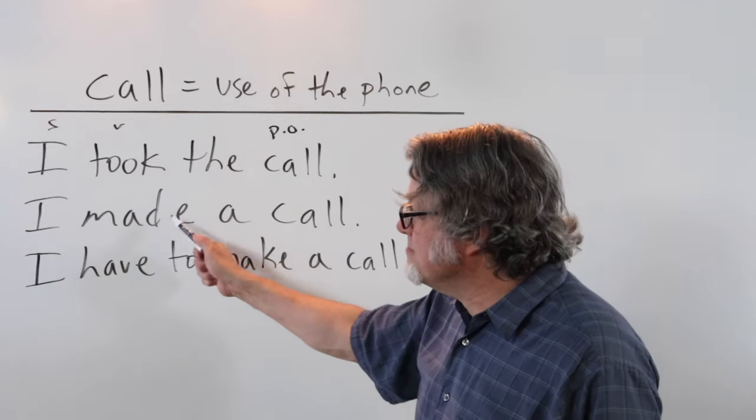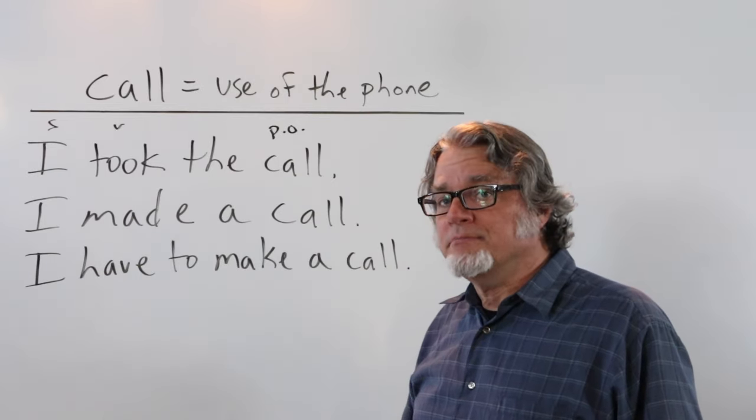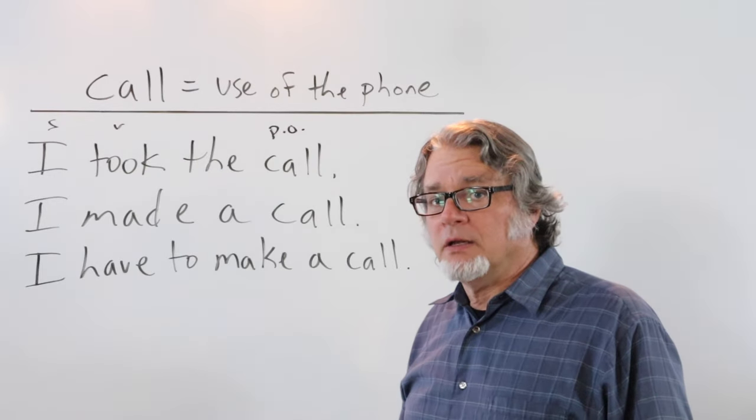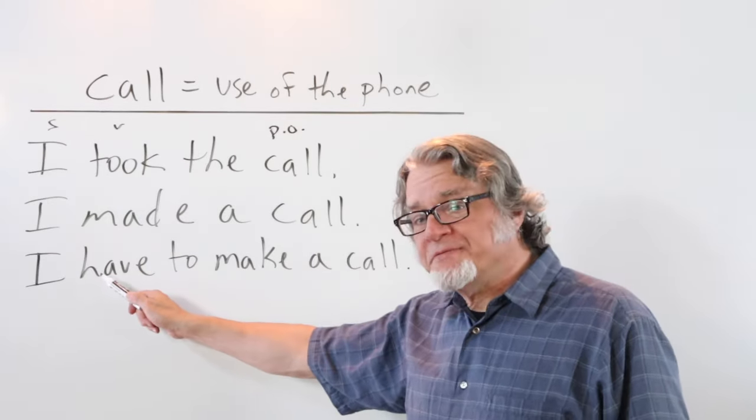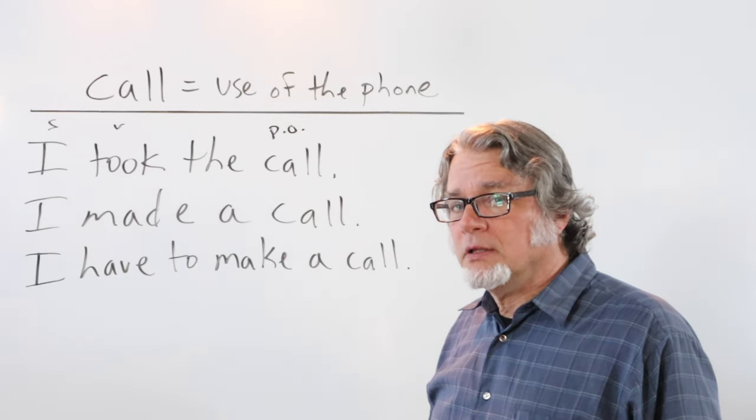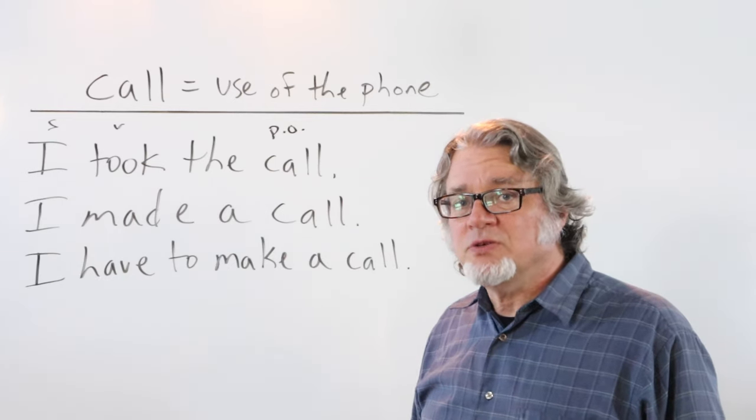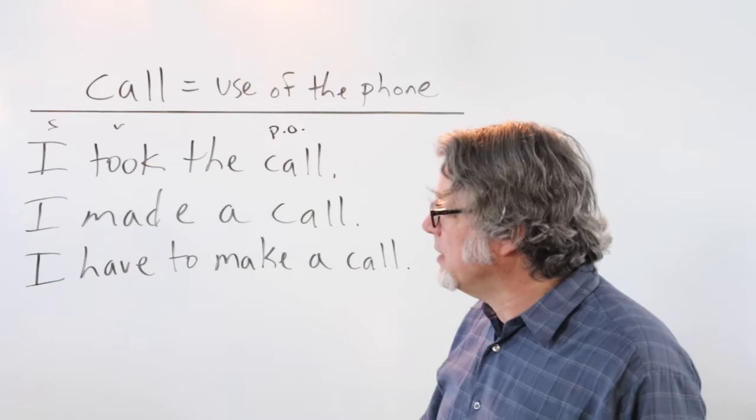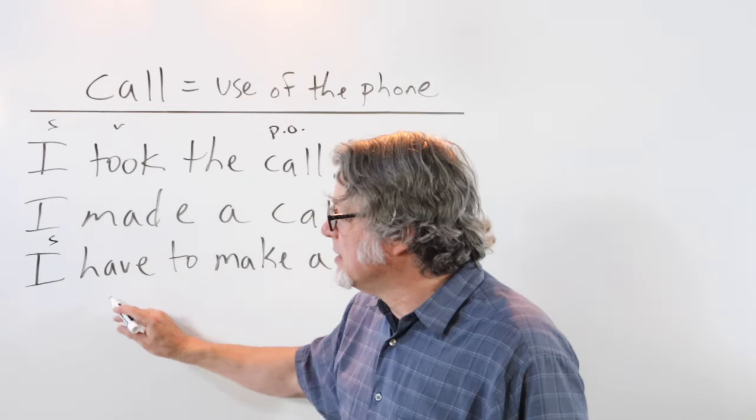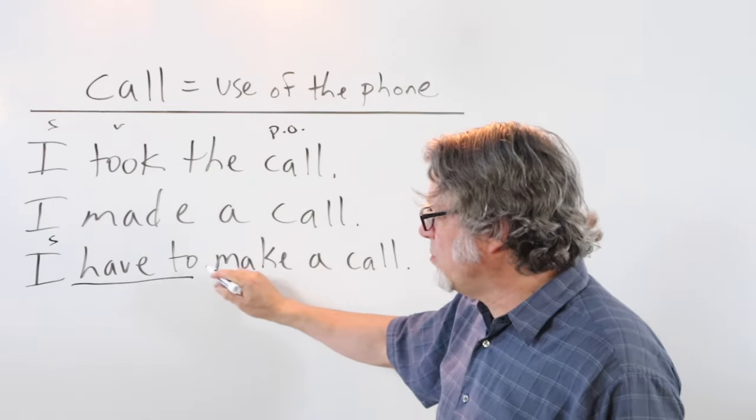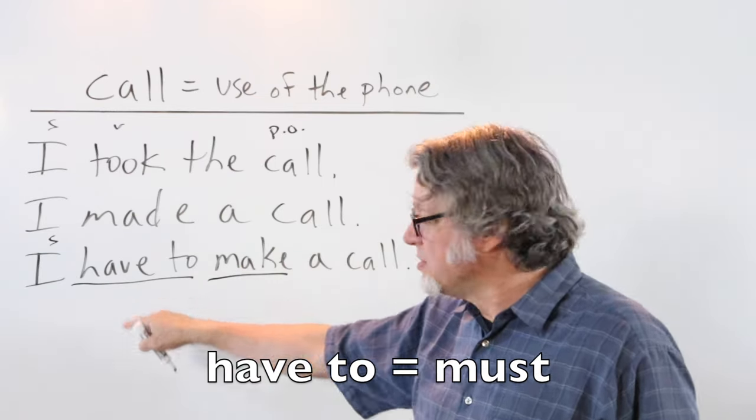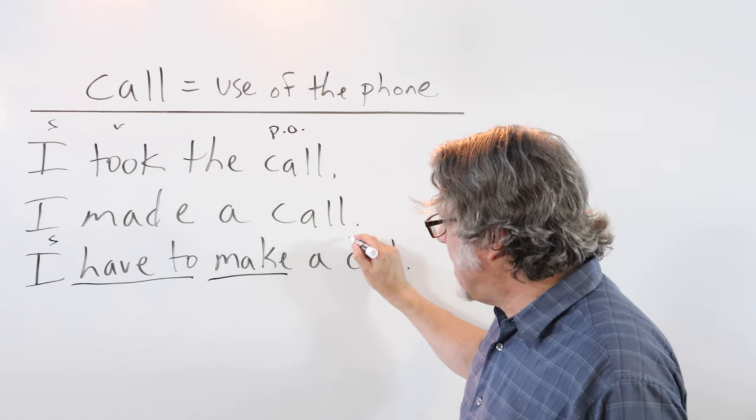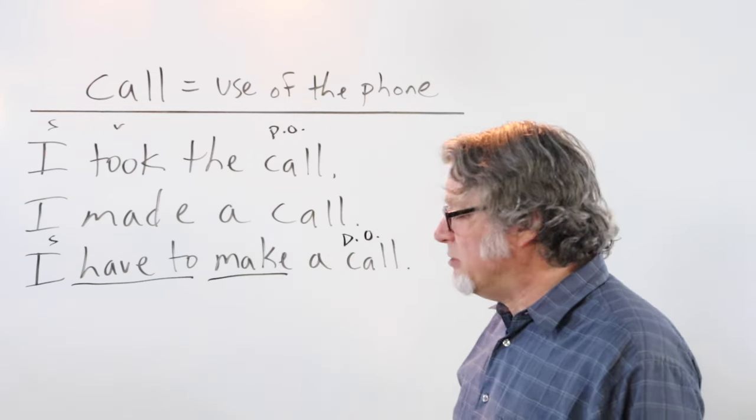Or, I made a call. I pushed the buttons on the phone to contact someone. I made a call. Or, I have to make a call. There's some need to use the phone. In this case, here's the subject, here's have to with the main verb make - this is similar to must - and then here is the object, the direct object.